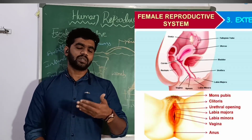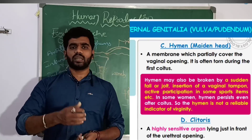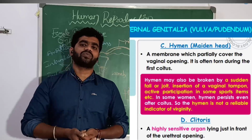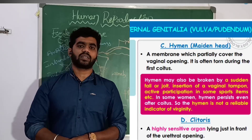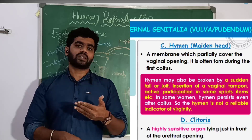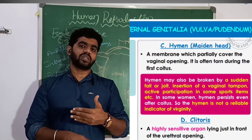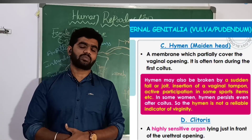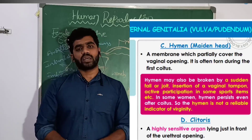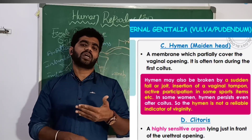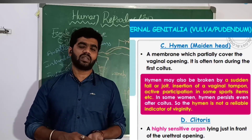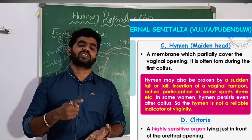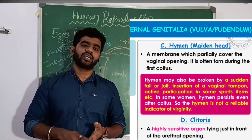The hymen is a thin layer partially covering the vaginal opening. It can break during first sexual intercourse, but it can also get torn due to physical activities such as sports, horse riding, or cycling. So the hymen is not a reliable indicator of virginity.